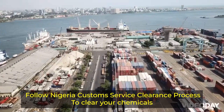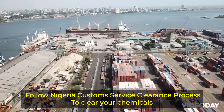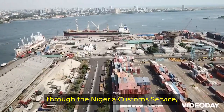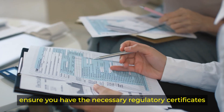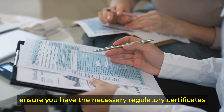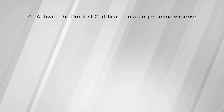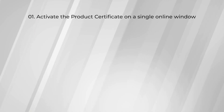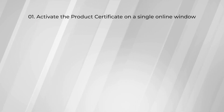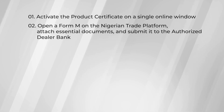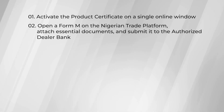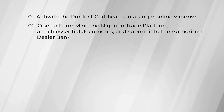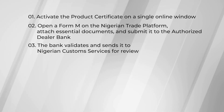Step 4: Follow the Nigeria Custom Service clearance process. To clear your chemicals through the Nigeria Custom Service, ensure you have the necessary regulatory certificates. First, activate the product certificate on the Single Online Window. Second, open a Form M on the Nigerian Trade Platform, attach essential documents, and submit it to the authorized dealer bank.